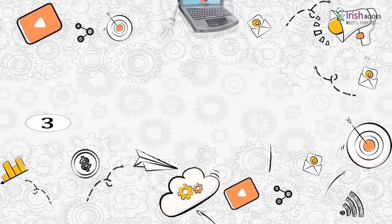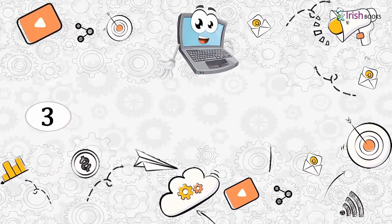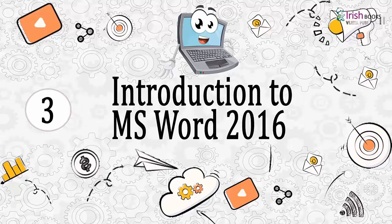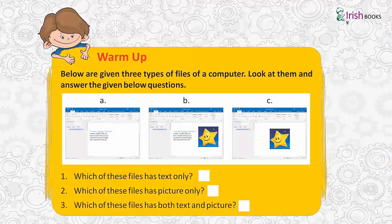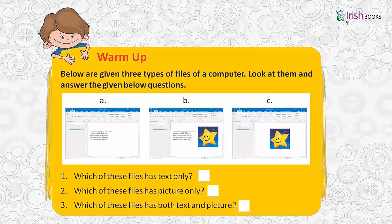Chapter 3: Introduction to MS Word 2016. Warm Up: Below are given three types of files of a computer. Look at them and answer the questions: Which of these files has text only? Which of these files has picture only? Which of these files has both text and picture?